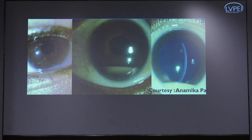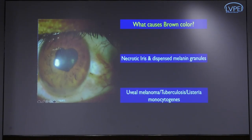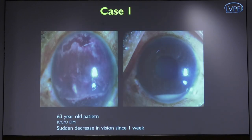This slide is courtesy of my colleague Dr. Anamika. If you see cases with a pigmented hypopion, your window of suspicion should shift to something other than uveitis. A brown or pigmented hypopion can be due to necrotic iris and dispersed melanin granules, which can be a clue to underlying uveal melanoma. Similarly, in children with a sterile hypopion, one differential to keep in mind is retinoblastoma.